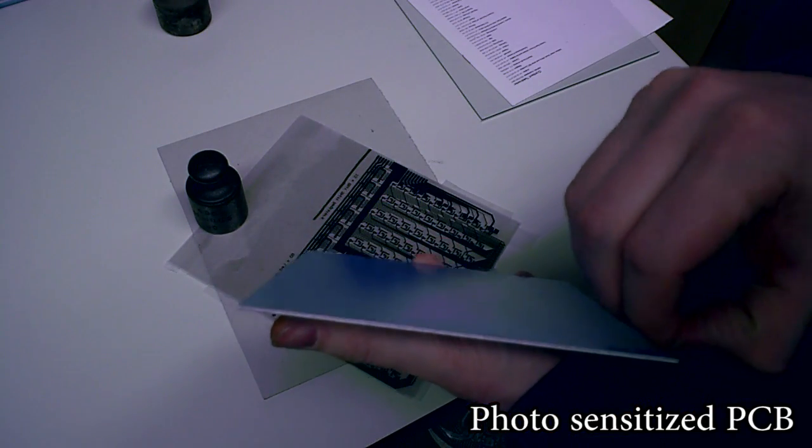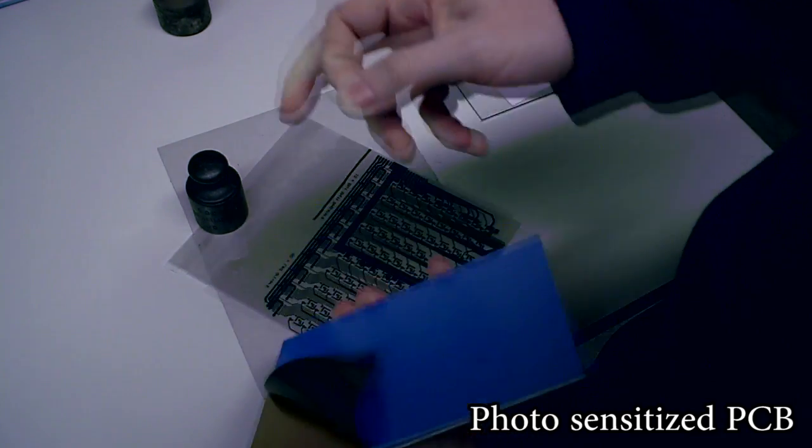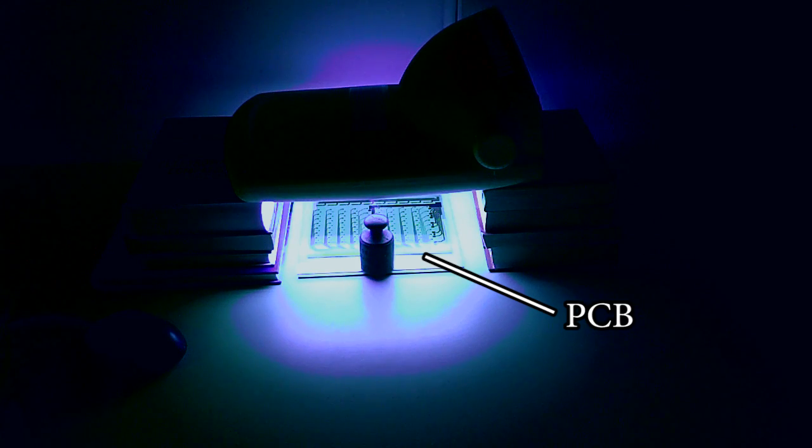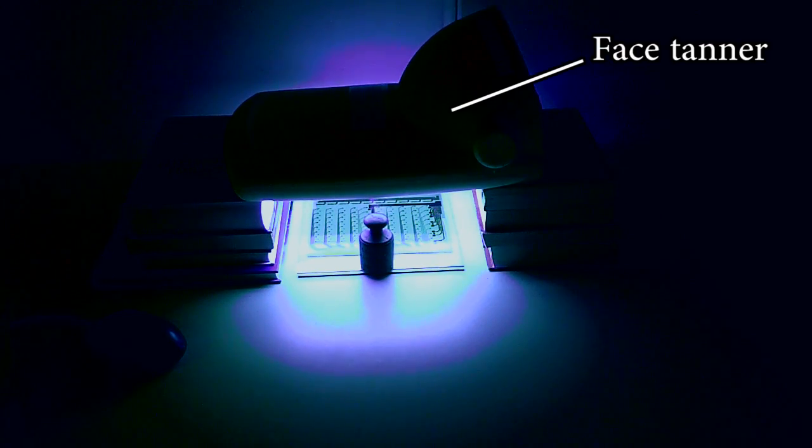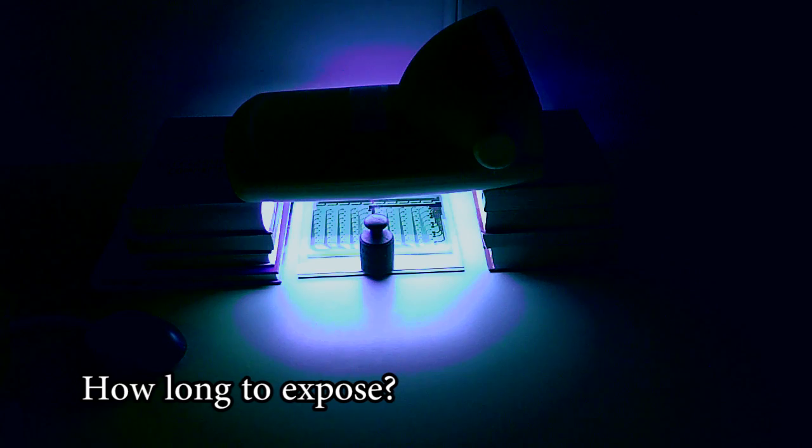The face tanner, here, is used as a UV light source. The exposure time of the PCB to the UV light depends on two things. The UV light source, and its distance to the PCB. So for this particular setup, we need to determine how long we have to expose the PCB.